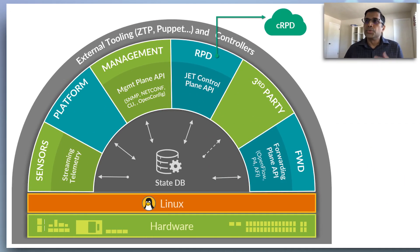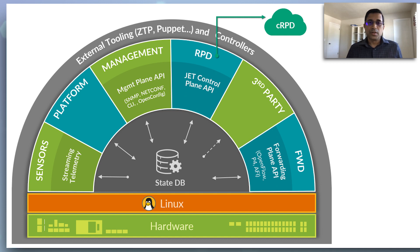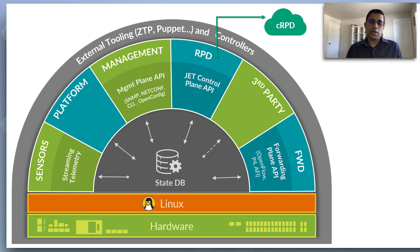Sure, Brooks. Software disaggregation in the context of this discussion refers to the components that make up a modern network operating system. Typically, the components that make up a network operating system are the Linux kernel, the base, and the applications that run in user space, and the centralized data store that is API-driven that allows these applications to communicate among each other.